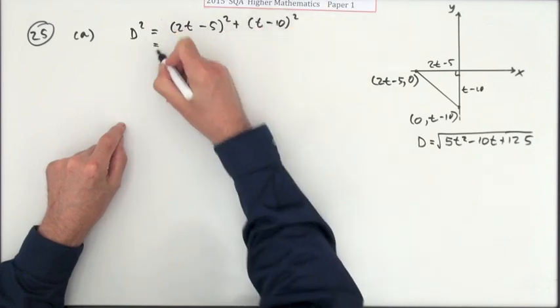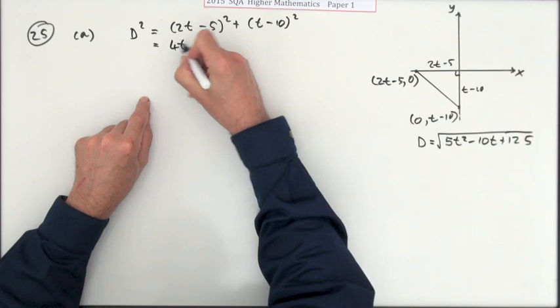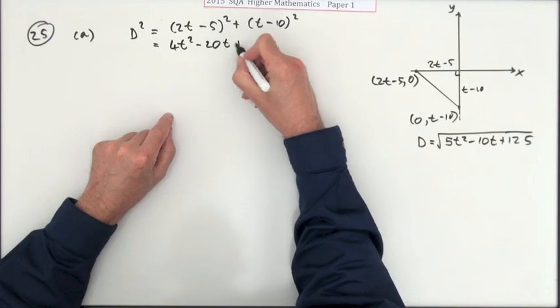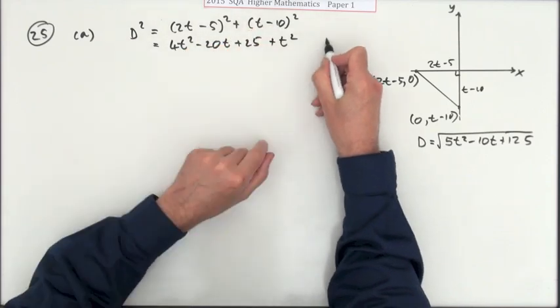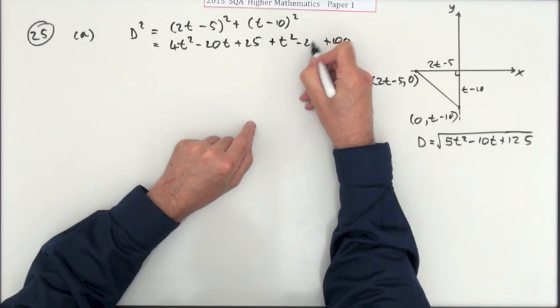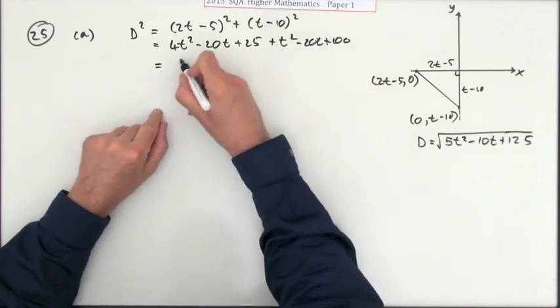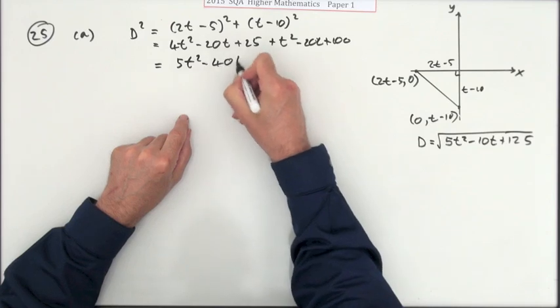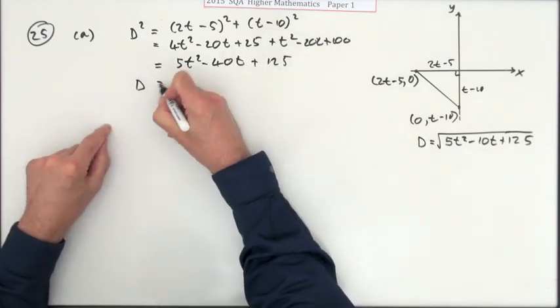So multiply the brackets, square the bracket. That's 4t squared minus twice the product, that's 10, that's 20t plus 25. Square this bracket: square the first, square the last, plus 100 minus 10 doubled, minus 20. So adding up the bits: 5t squared minus 20 minus 20, minus 40t plus 125.